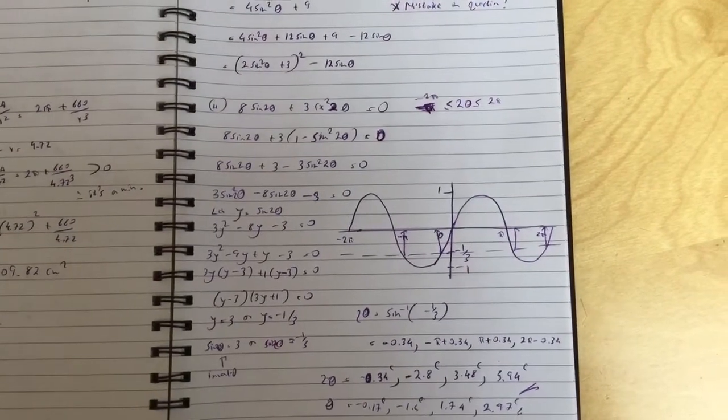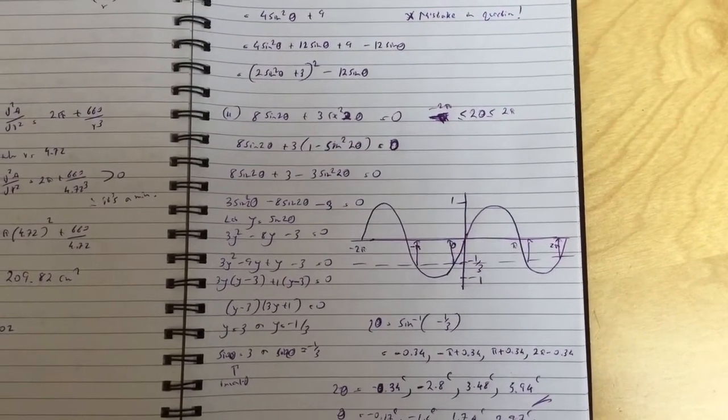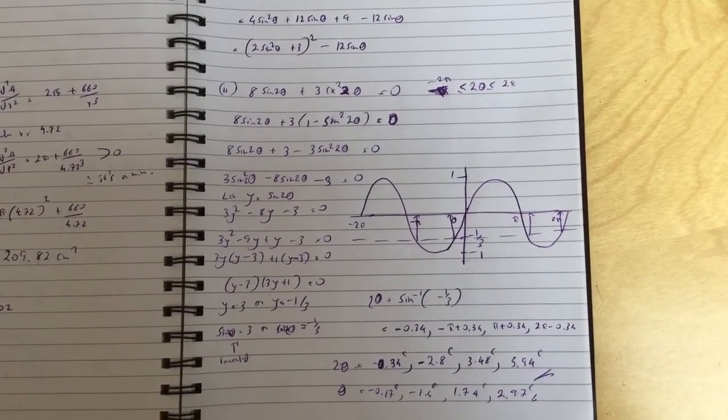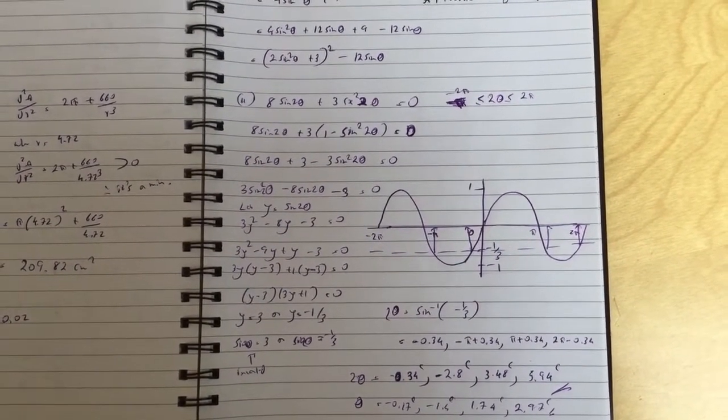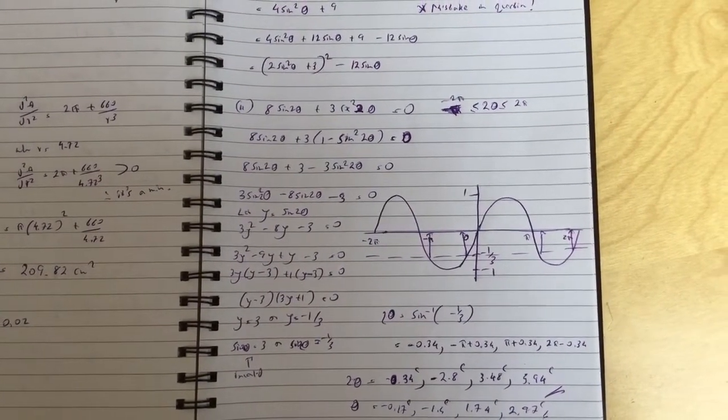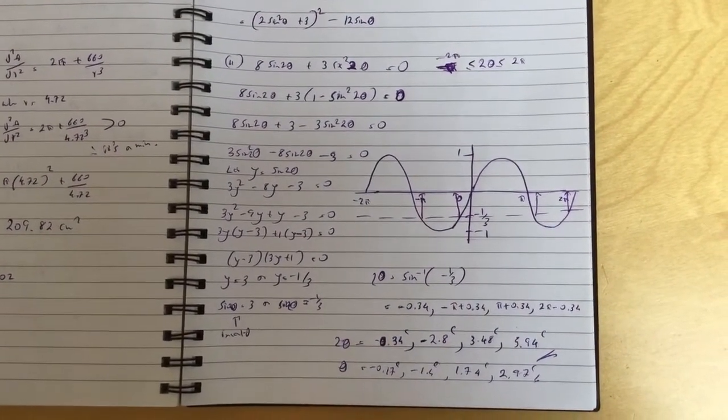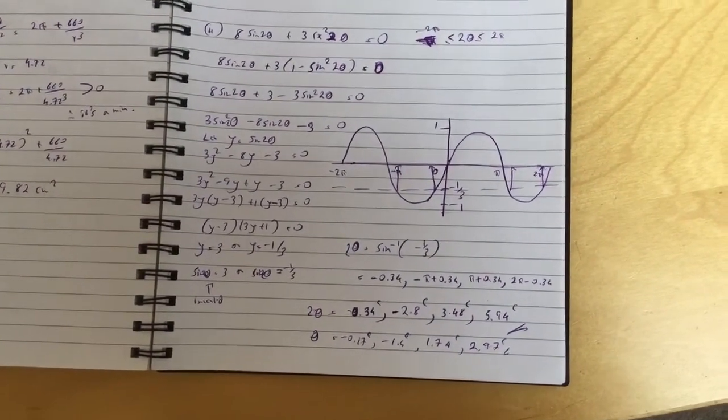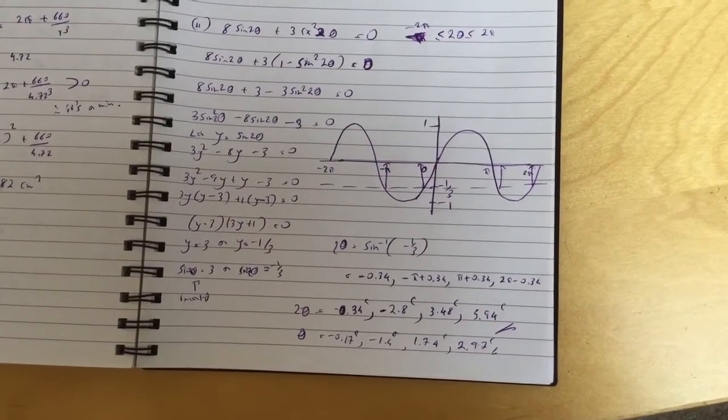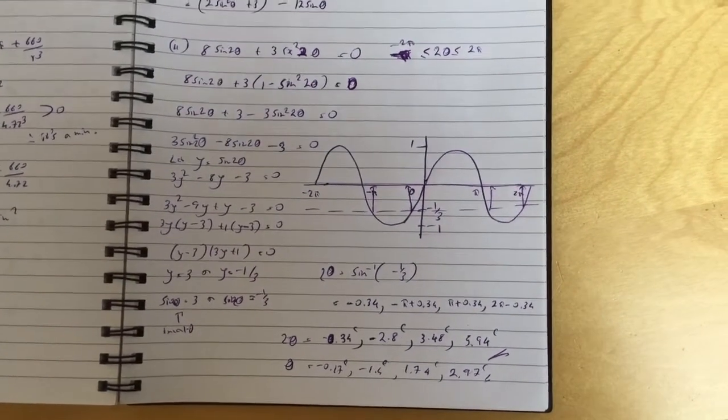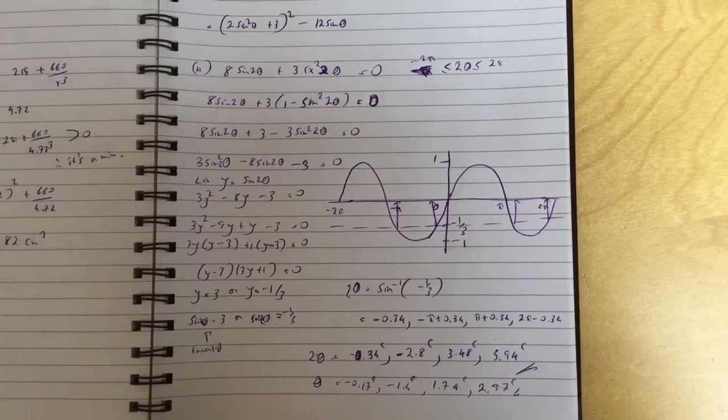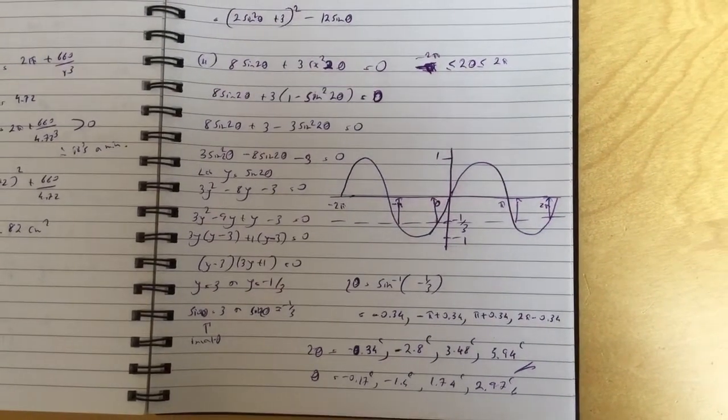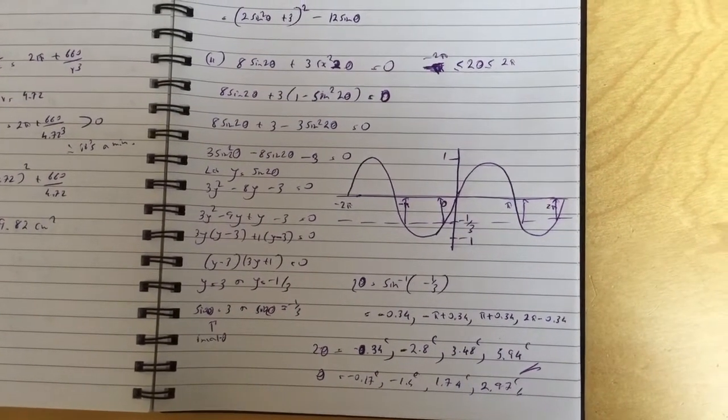And this one, so you simplify, get it all in terms of sin(2θ). Also don't forget to change the limits, it's now 2θ, so it's between 2π and -2π, not π and -π. So I let y equal sin(2θ), so I get (y - 3)(3y + 1) as the two brackets. And y = 3 or y = -1/3. So y = 3 is sin(2θ) = 3, which is invalid. So sin(2θ) = -1/3 gives you these answers for 2θ. And when you divide it, you get -0.17, -1.4, and then positive 1.74 and 2.97.